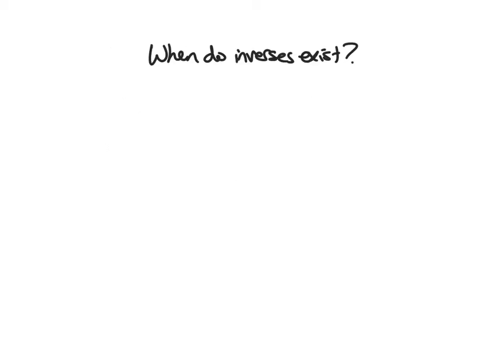So inverse functions actually don't always exist. So we want to ask ourselves, when do they exist? When am I going to have an inverse function? So let's think first of what can go wrong. So I'm going to give you as an example. So let's think of f of x equals x squared.